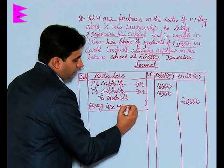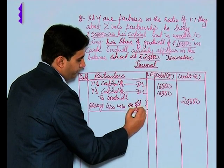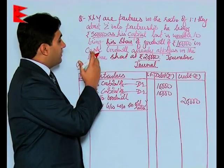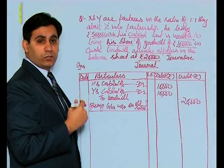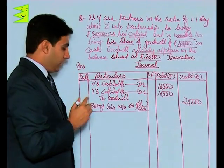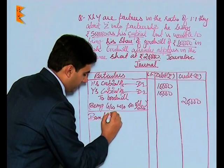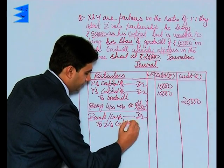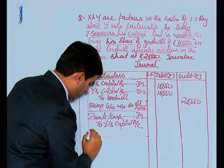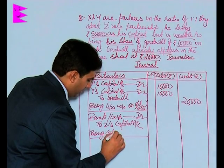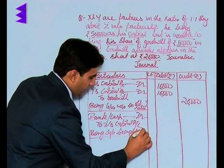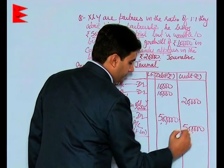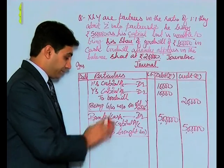Now coming to the second entry: Z has brought in 5 lakh as his capital but is not bringing goodwill. Since he is bringing capital only, the entry would be made to record capital — that is bank or cash account debited, to Z's capital account. Narration: being capital brought in by the new partner. The amount is rupees 5 lakh.